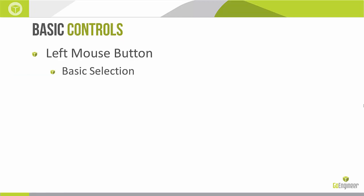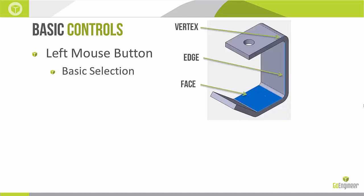Moving on, we have basic controls. The left mouse button is pretty standard — it's basically for selecting things: clicking on objects, highlighting them, and selecting an object to insert it into boxes looking for a selection. Different things we can select in the graphics window include a vertex, an edge, or a face. Once selected, it highlights with the default color of blue, which can be changed.